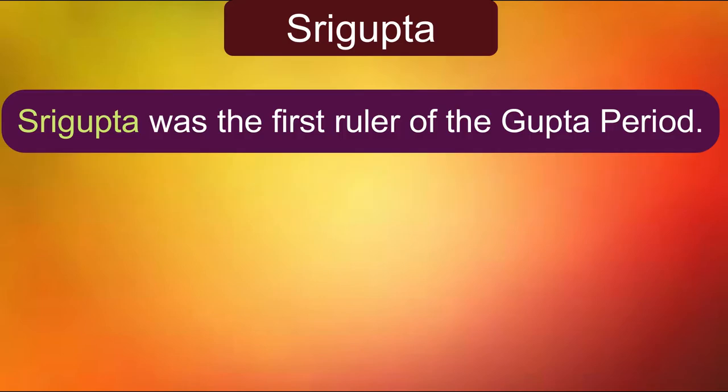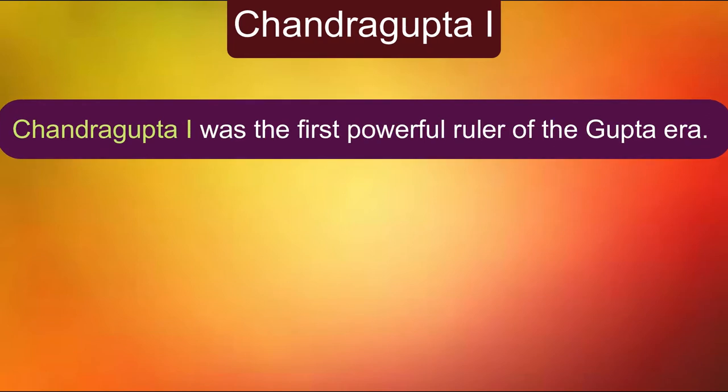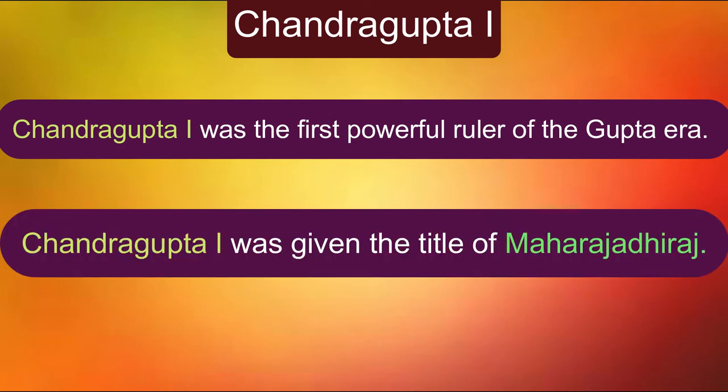Shri Gupta was the first ruler of the Gupta period. Chandragupta I was the first powerful ruler of this dynasty. He was given the title of Maharaja Adhiraj.